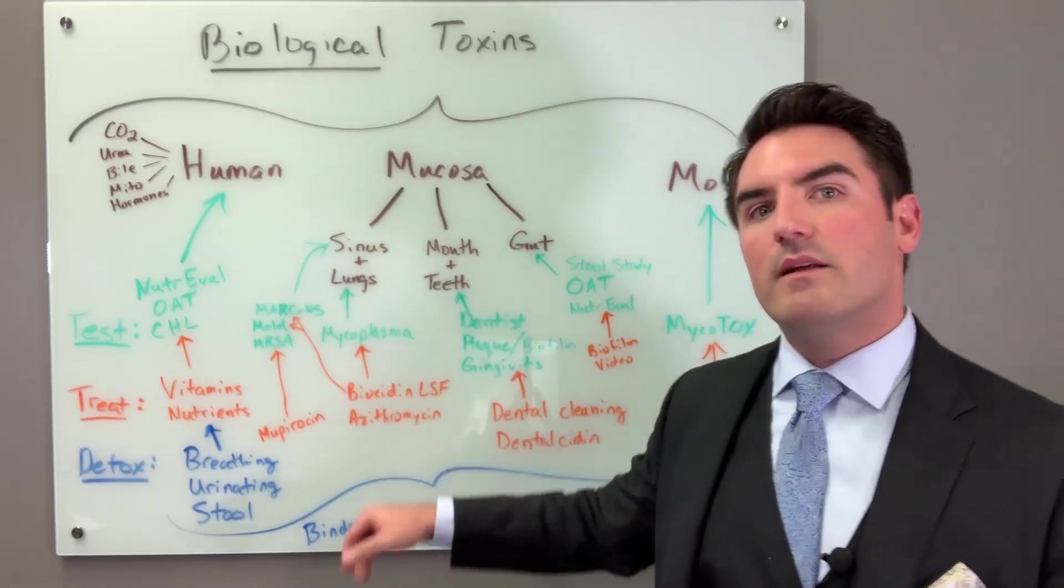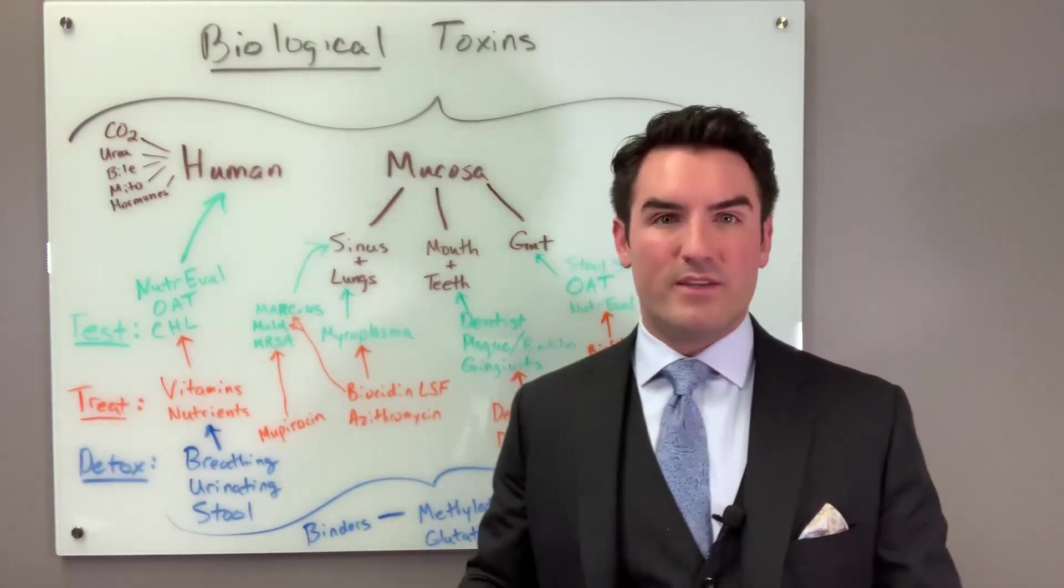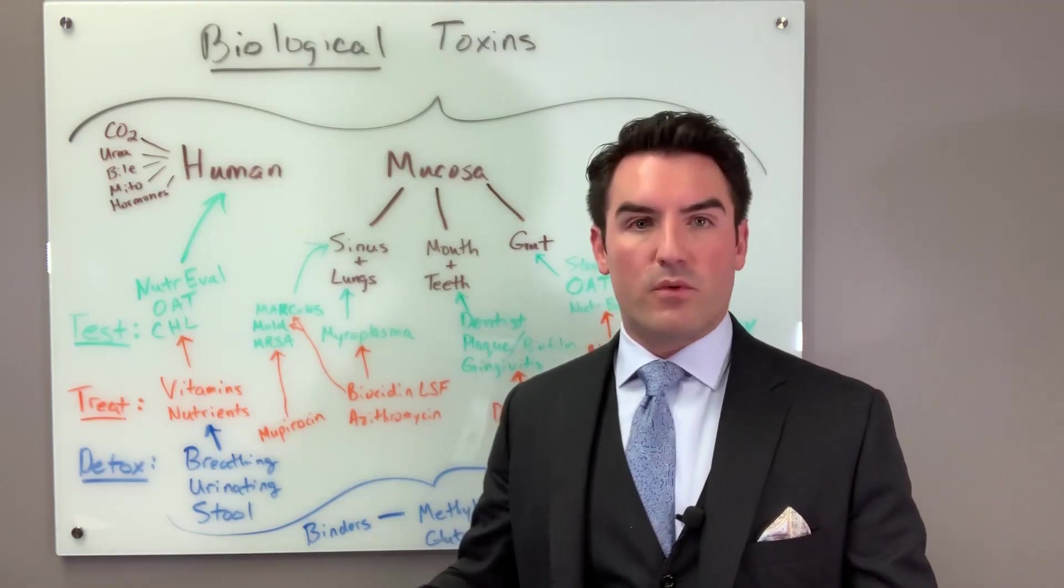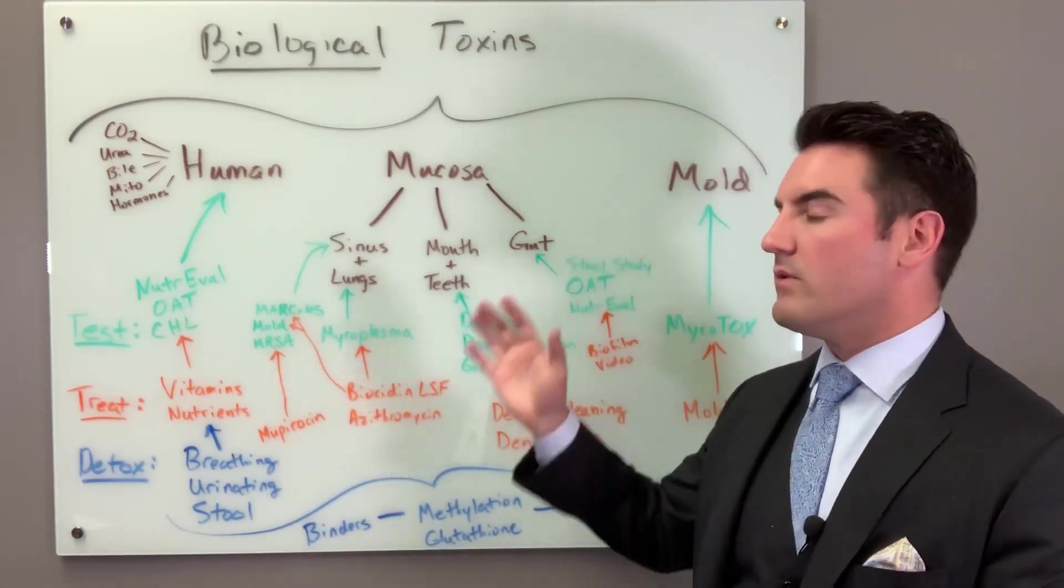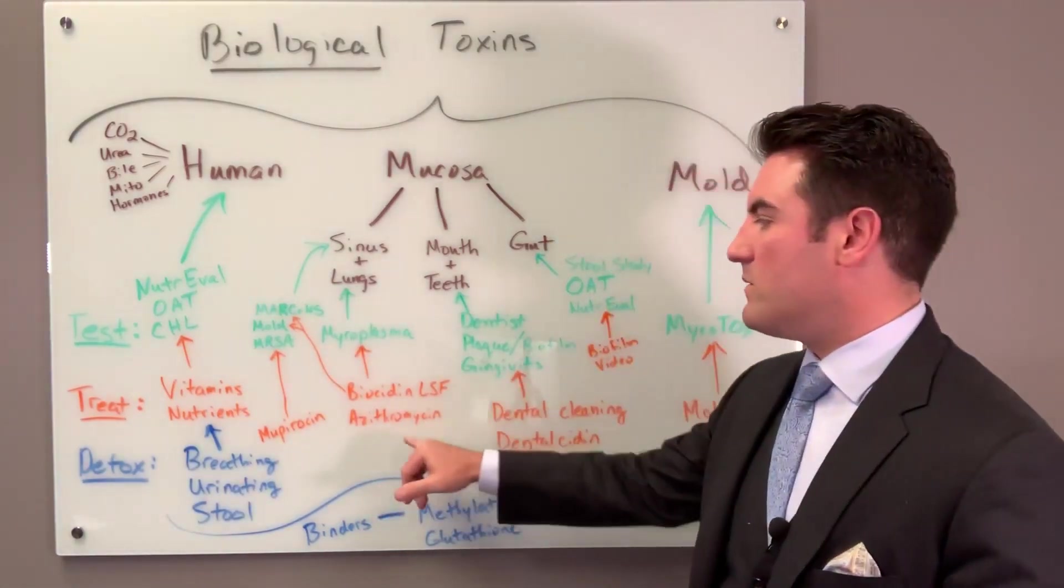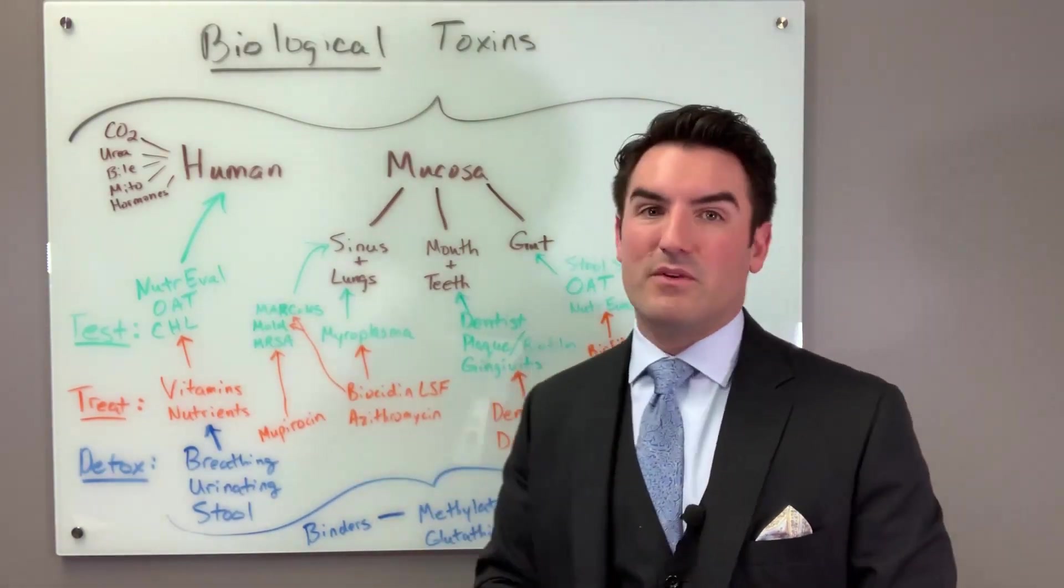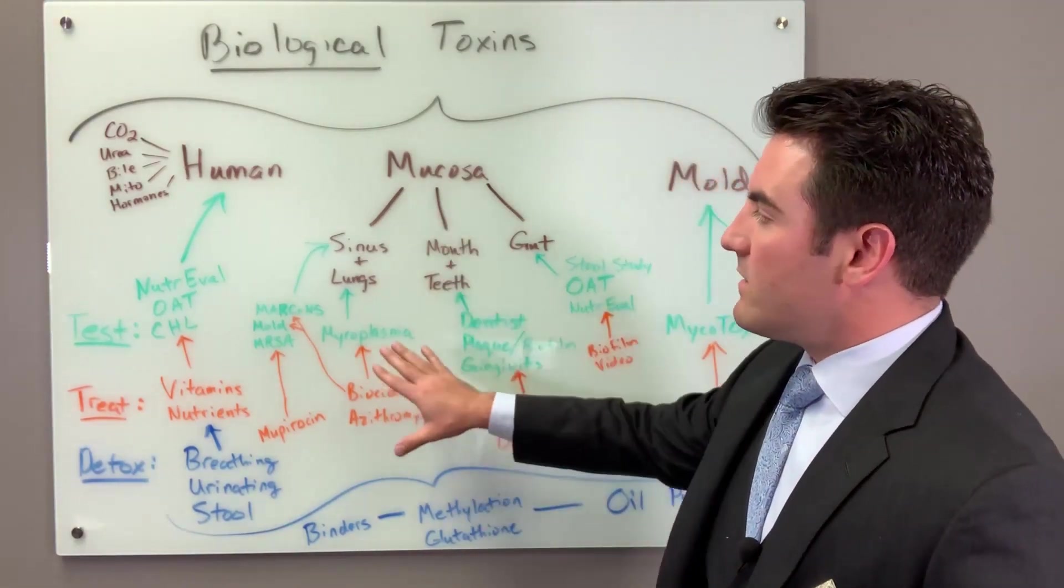Azithromycin, as you probably know, as a functional medicine doctor, we don't like using antibiotics. So unfortunately when we have to use it, we will of course protect the gut as much as possible, but we have to get rid of that organism in order to make forward progress. So we will use azithromycin and sometimes we have to do a 30-day course in order to ultimately eradicate it. So that's it on the sinus and lungs. There's many other things we can talk about, let's move on to mouth and teeth.